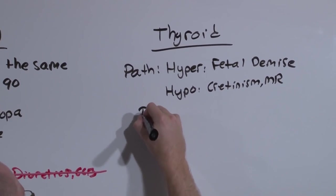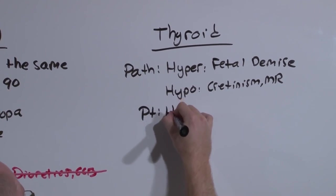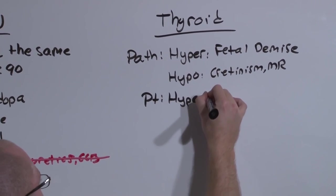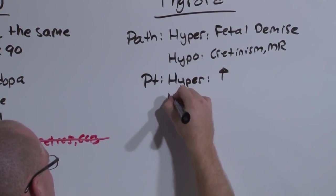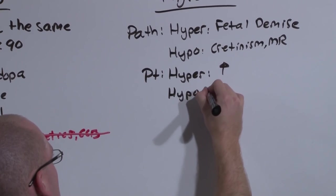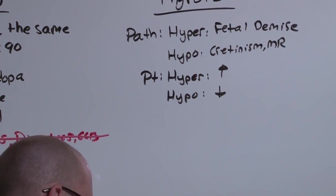And the patient you'll have to identify as hyper or hypothyroid. And in general, hyperthyroid patients have everything elevated, while hypothyroid have everything depressed. When I say everything, T4 drives mentation, metabolism, and movement.